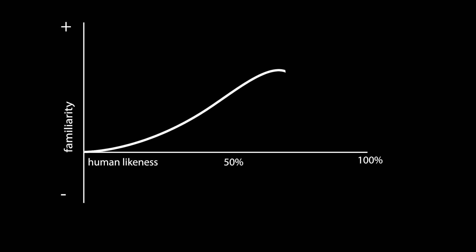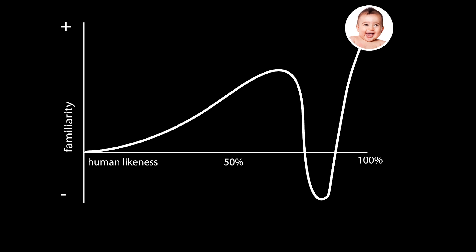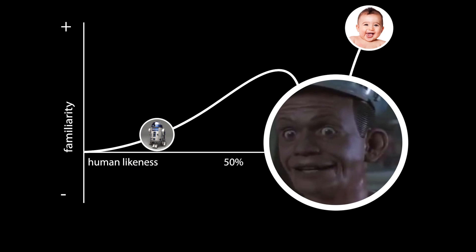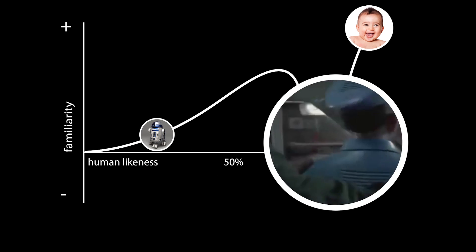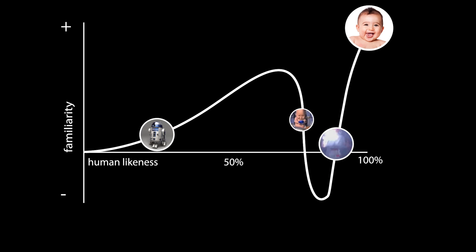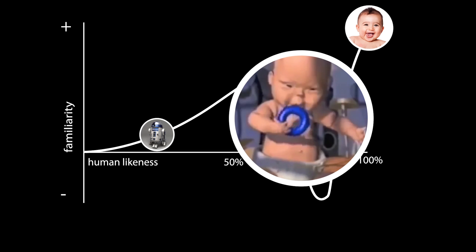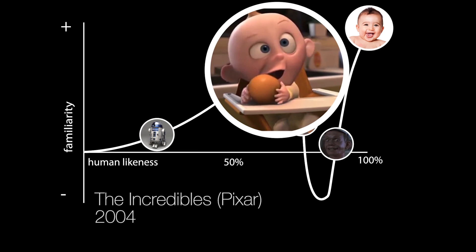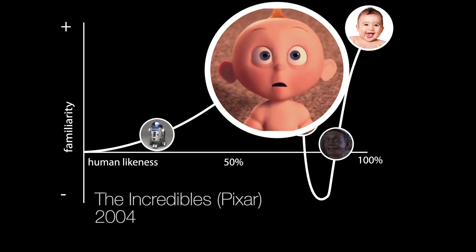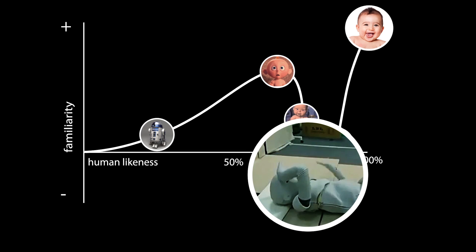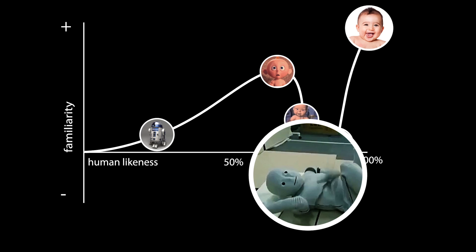Rule number three: avoid the uncanny valley. The uncanny valley is a 70s robotics term that came about when robots tended to look creepy. While it's easy to point out a creepy looking robot, even Pixar found itself on the wrong side of this valley. Pixar later mastered the left side of this valley, where things still look human but still have the sense of cuteness. We don't know all the factors that lead to this valley, but some robots just push our expectations of what humans should look like.